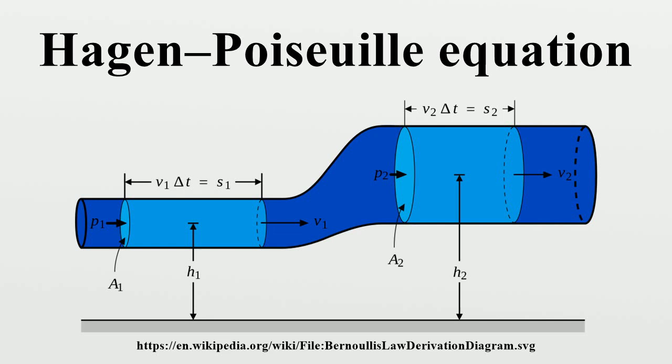The assumptions of the equation are that the fluid is incompressible and Newtonian. The flow is laminar through a pipe of constant circular cross-section that is substantially longer than its diameter, and there is no acceleration of fluid in the pipe.